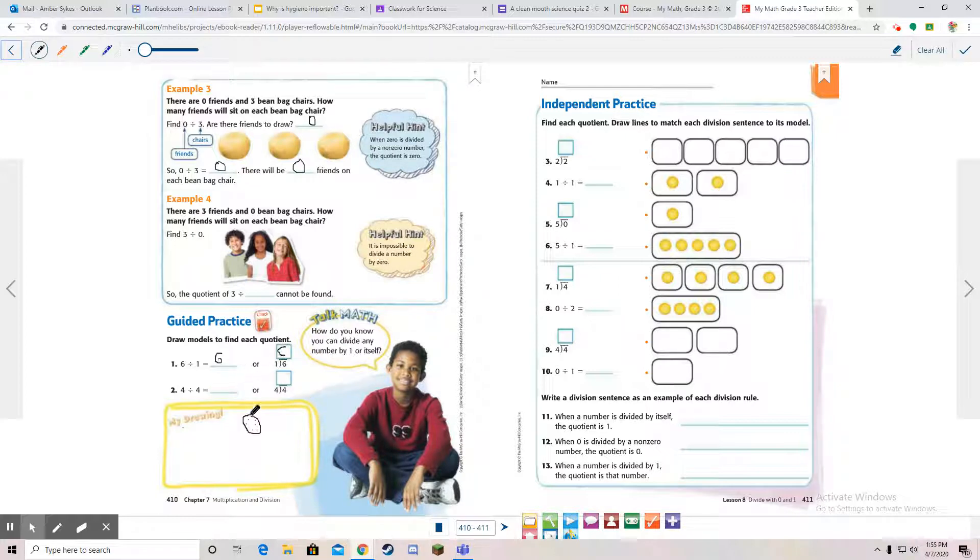Four divided by four. We have four chairs and four people. Let's equally divide them out. One, two, three, four. In each one, there's only one. Four divided by four is one. Easy peasy.